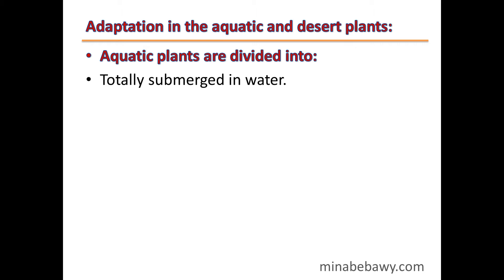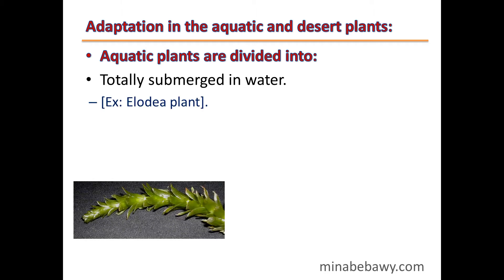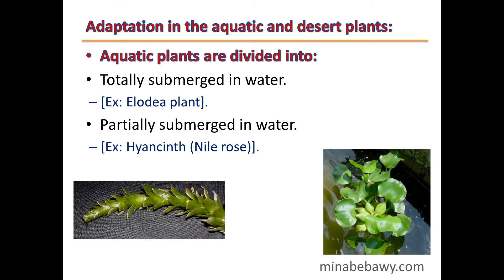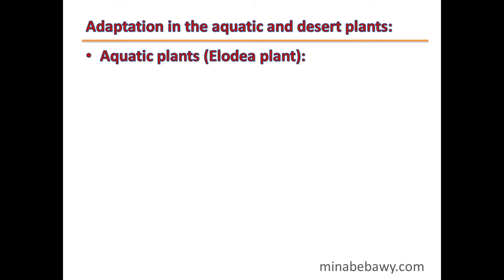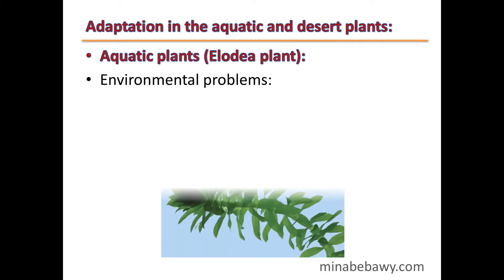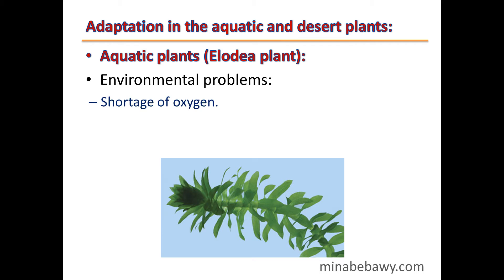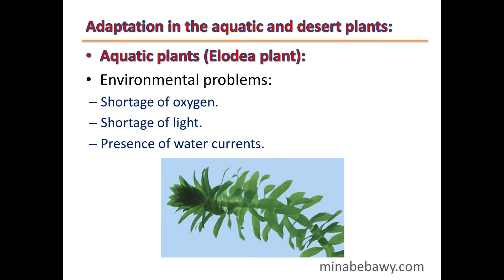Aquatic plants are divided into: totally submerged in water, such as the Elodea plant, and partially submerged in water, such as Hyacinth or Water Lily. We will talk about the Elodea plant and the environmental problems it faces: shortage of oxygen, shortage of light, and presence of water currents.